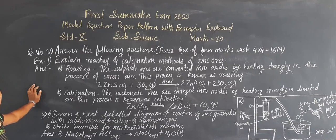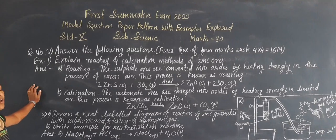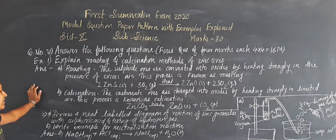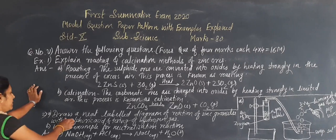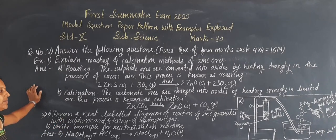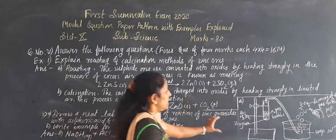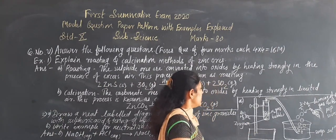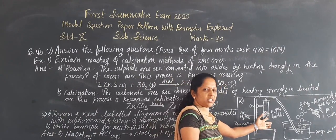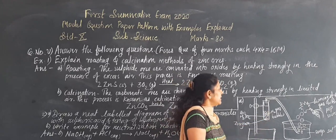Draw a well-labelled diagram of the reaction of zinc granules with sulfuric acid, and also with hydrochloric acid. You have to draw it — it carries three marks. There is also another argument question about writing an example of a neutralization reaction. You should draw the diagram of the reaction of zinc granules with sulfuric acid — take a boiling tube or best room with zinc granules and sulfuric acid.